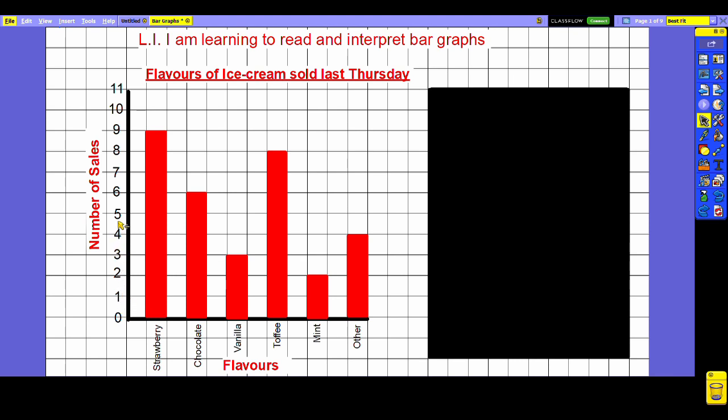Next you want to look very closely at the scale to see what increments your graph is going up in. In this case it's a very simple scale to start off with and it's just going up one number at a time, so that makes this information very easy to process.